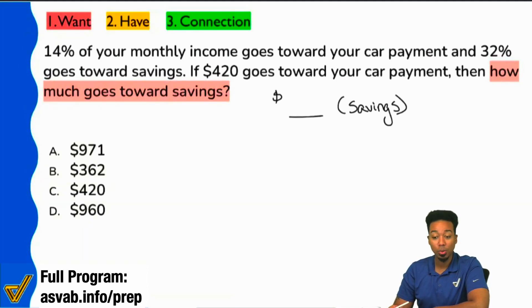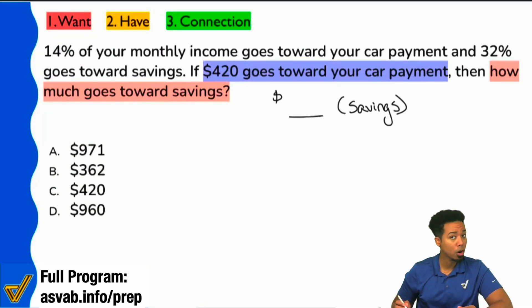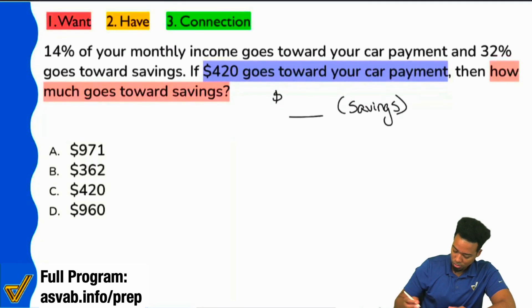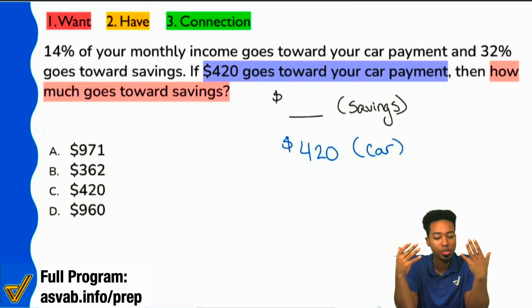Okay, great. So next up, what information do we have? Well, in the same sentence, because the how much goes toward savings, that wasn't the only thing in that sentence. So let's make sure we just cover our basis. And it says $420 goes towards your car payment. Okay, sounds good. So I'm going to say right over here. Now, here's where it's very important to get your setup correct.